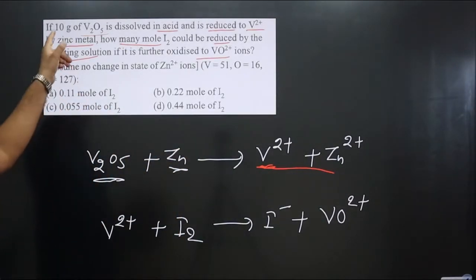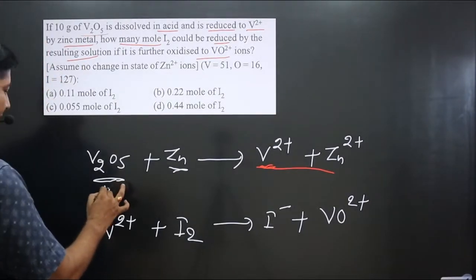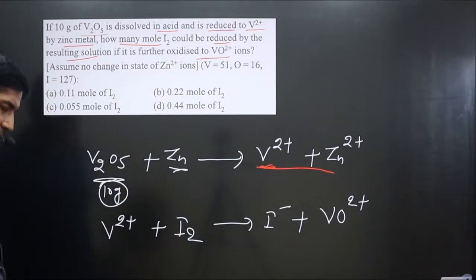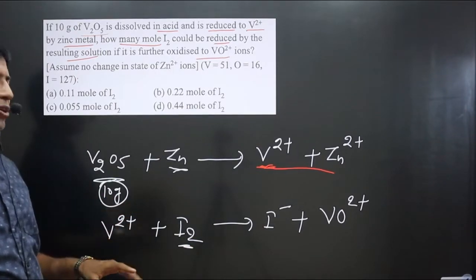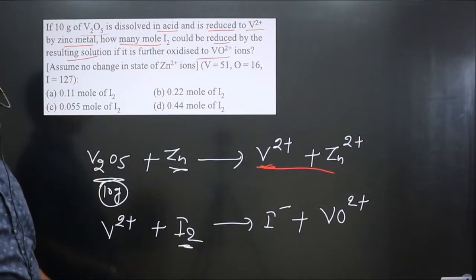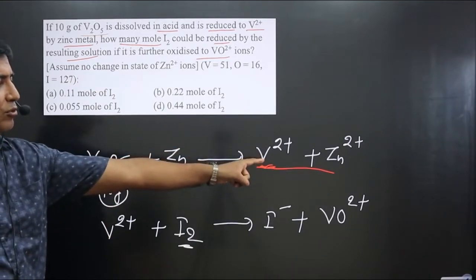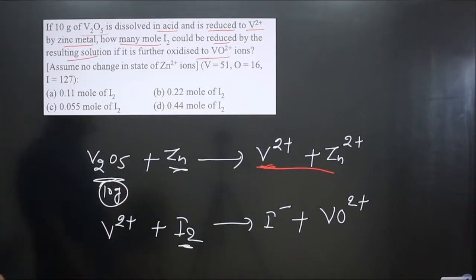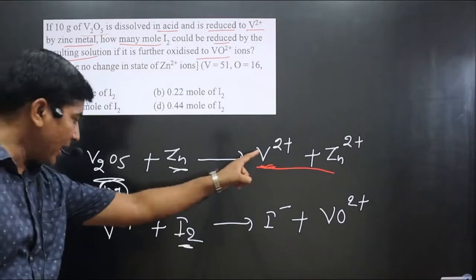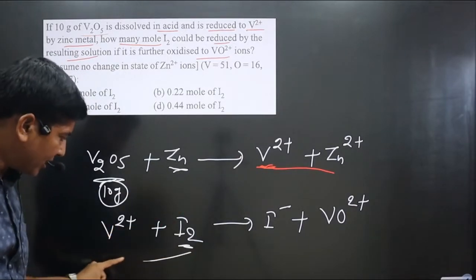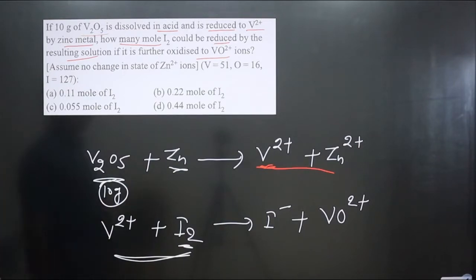Data is given only for V2O5 — 10 grams. We have to calculate the moles of I2. The approach: first calculate moles of V2O5 by converting mass to moles. Then calculate moles of V²⁺ using equivalence. Then jump to the second equation and equate their equivalences to calculate moles of I2.